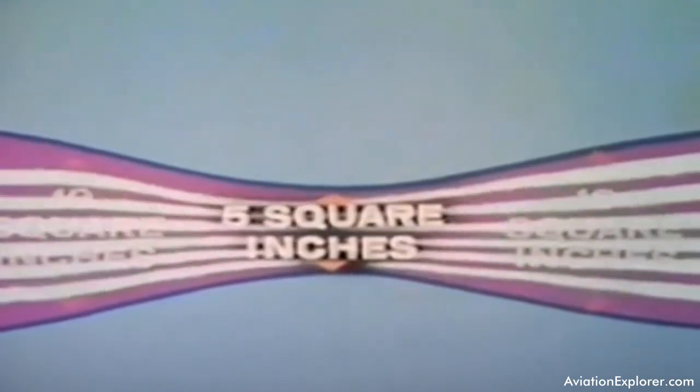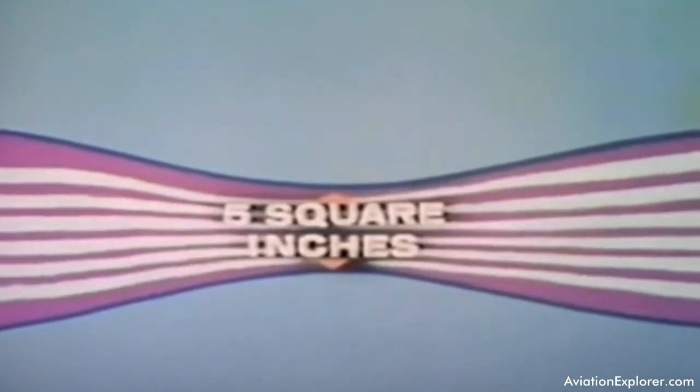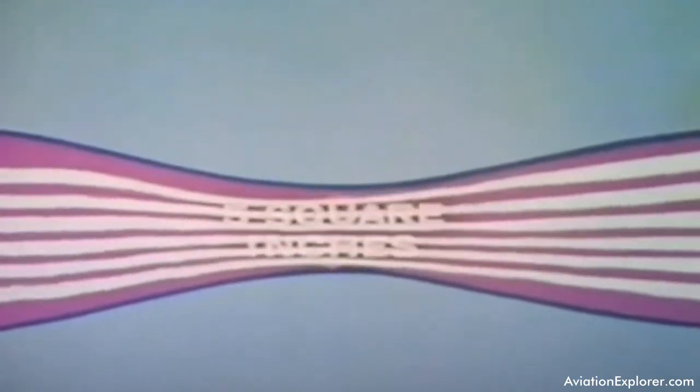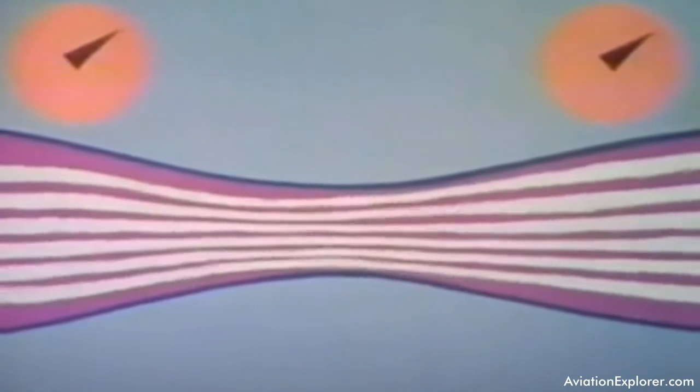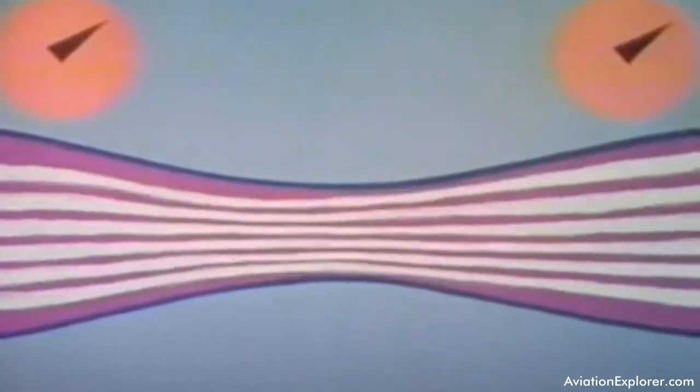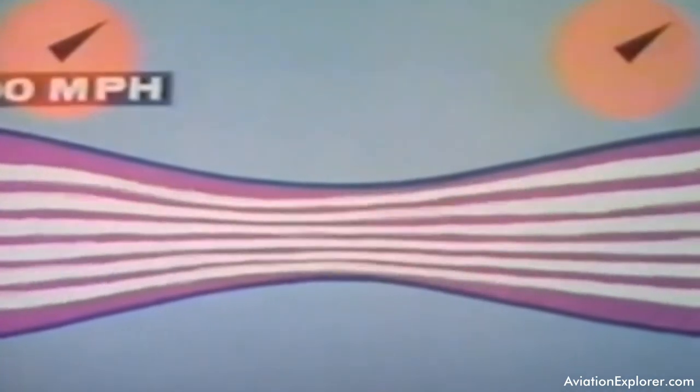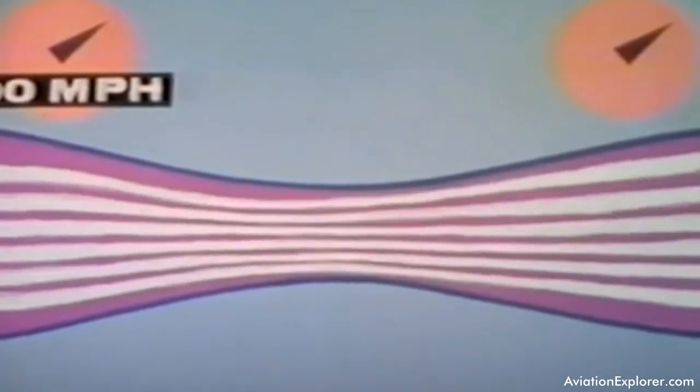Now, if we direct smoke lines through the device, its pattern will show that something happens to the air where it goes through the narrowed part. What we find is that when the airspeed is 100 miles an hour at the entrance of the device, it is also 100 miles an hour at the exit.